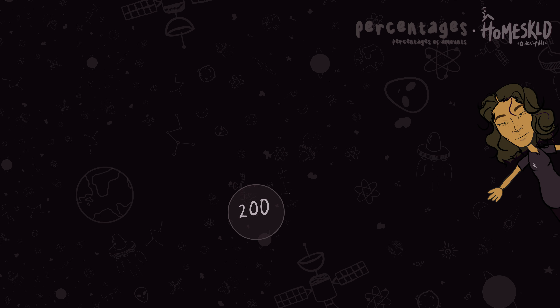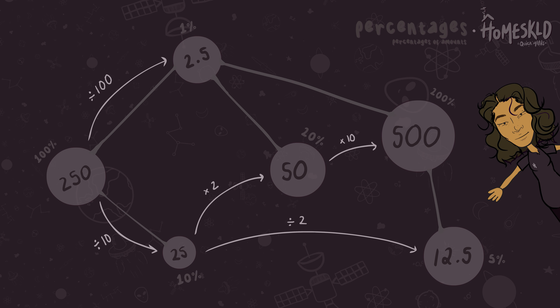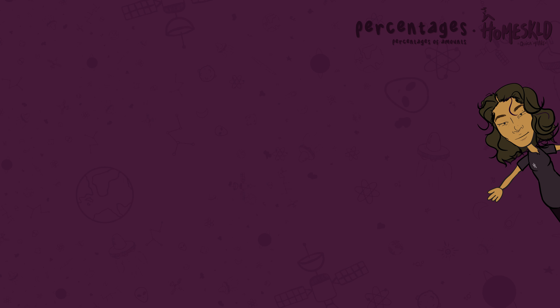Observe what happens to the original value to navigate around the constellation according to their percentage values. From 100% to 50% we divide it by 2, then from 50% to 10% we divide it by 5. We see the same thing here and here too.